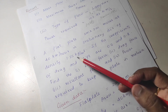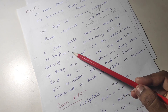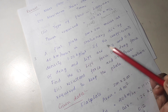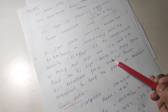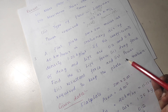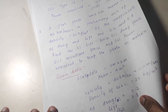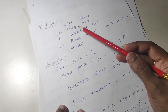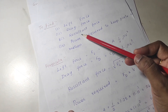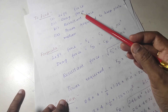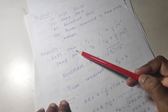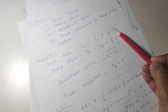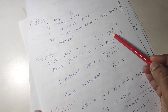The last problem: a flat plate 2 meter by 2 meter moves at 40 kilometers per hour in stationary air of given density. Coefficients of drag and lift are given. Find the lift force, drag force, resultant force, and power required to keep the plate in motion. The formula for lift force is FL equals CL into A into half of rho V squared.